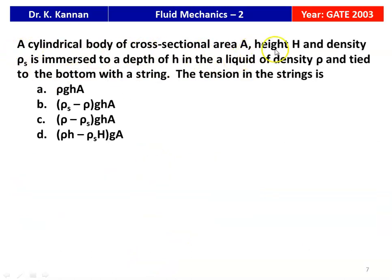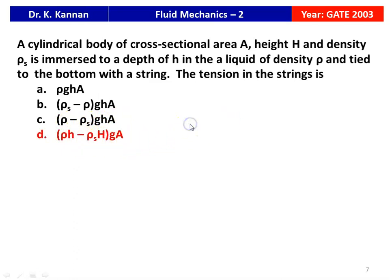The next question: 'A cylindrical body of cross-sectional area A, height H, and density ρ_s is immersed to a depth h in a liquid of density ρ and tied to the bottom with a string. The tension in the string is —' with options: ρgha, (ρ_s − ρ)gha, (ρ − ρ_s)gha, (ρh − ρ_s·H)ga. The correct answer is (ρh − ρ_s·H)ga, where ρ_s is the density of the material, H is the height of the cylindrical body, ρ is the density of the fluid, h is the immersion depth, g is gravitational acceleration, and A is cross-sectional area.